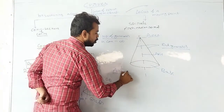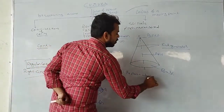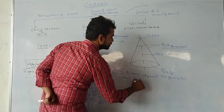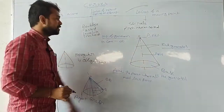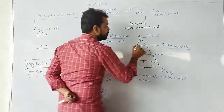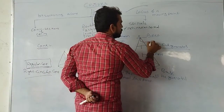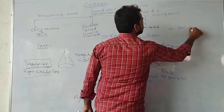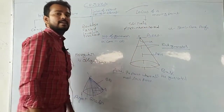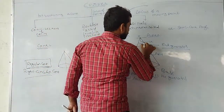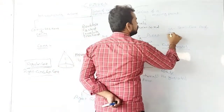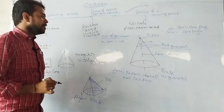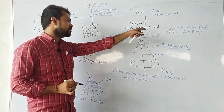The apex is the point where all generators meet the axis. The angle made by one of the generators and the axis is known as alpha, called the semicone angle. The angle between two end generators is two alpha, known as the cone angle. We have very important applications with alpha and two alpha.